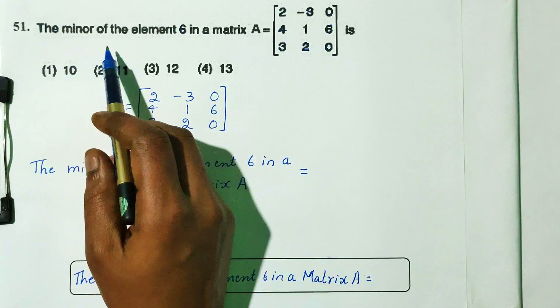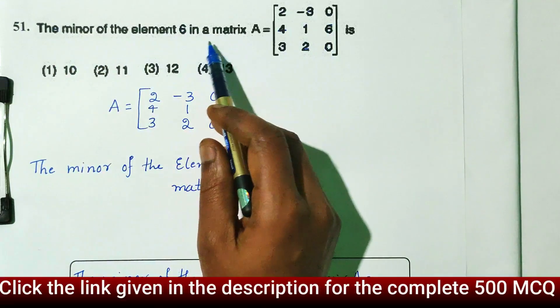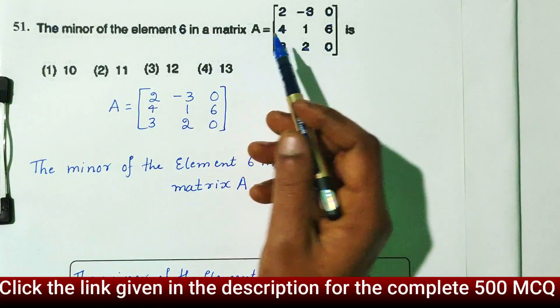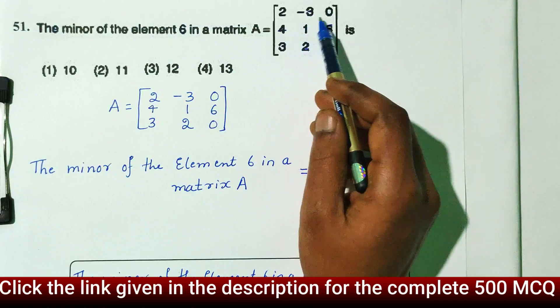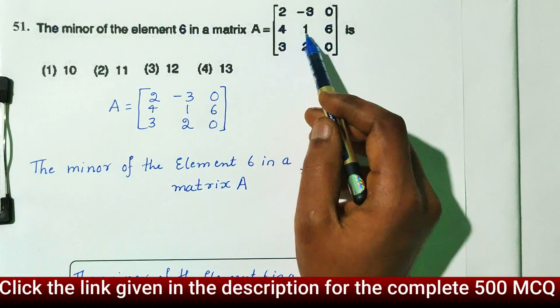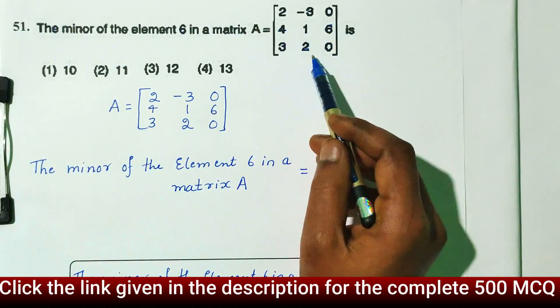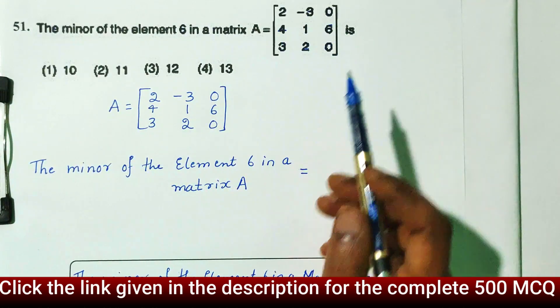Question number 51. The minor of the element 6 in the matrix A is equal to: 2, minus 3, 0, 4, 1, 6, 3, 2, 0.